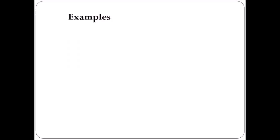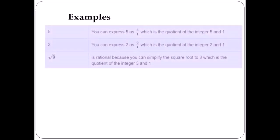Now we can look at some examples. First, the number 5 — we can write 5 as 5 upon 1, and therefore 5 is a rational number. Second, the number 2 is also expressed as 2 upon 1, which is the quotient of the integers 2 and 1, and hence 2 is a rational number. Third, square root of 9 is a rational number because it simplifies to 3, which is the quotient of integer 3 and 1.